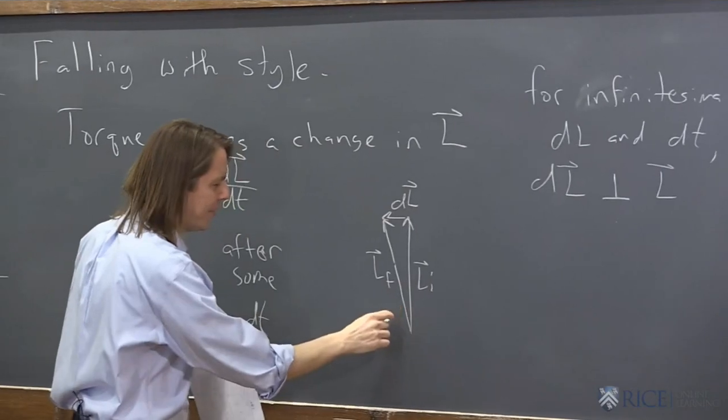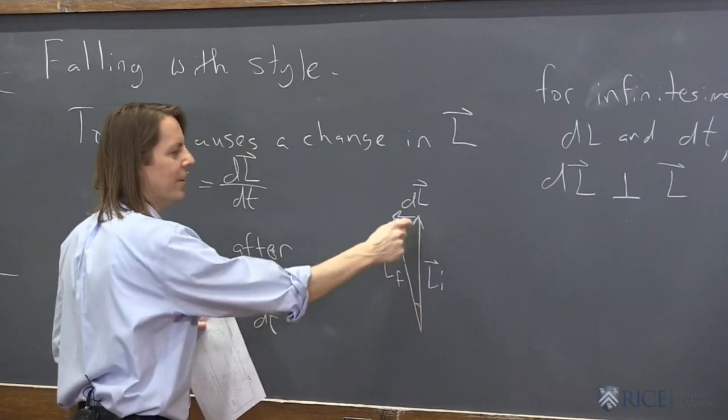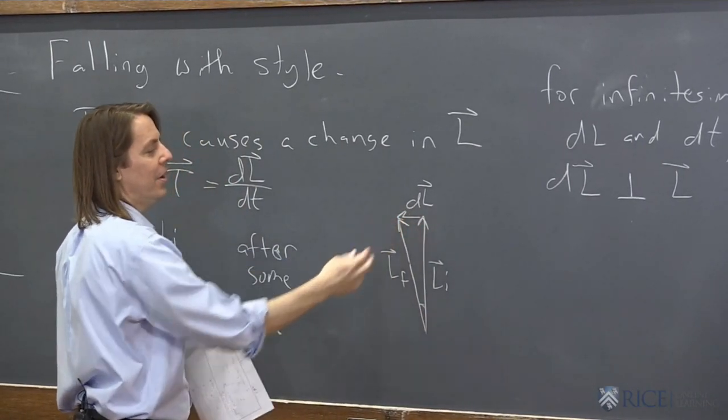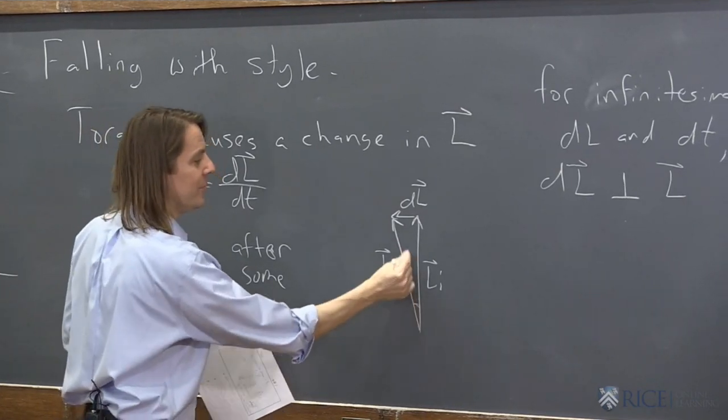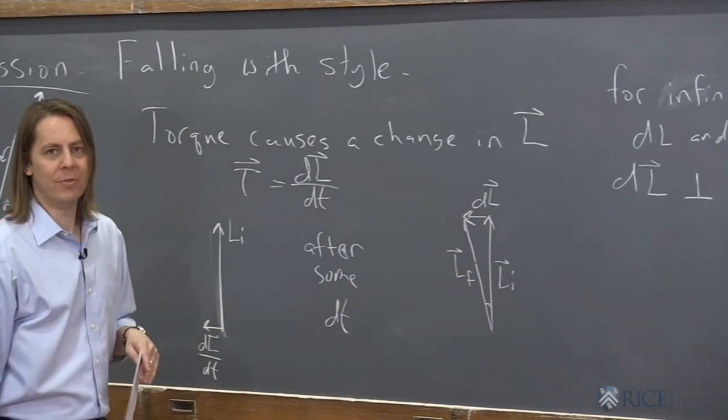So you can see the way I drew it here, if we had a teeny little angle here, dL is basically perpendicular to both Li and Lf, right? And in the limit that this angle goes to zero, dL is perpendicular to both of them.